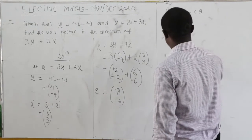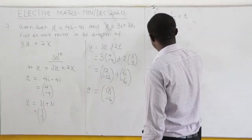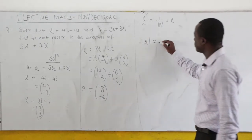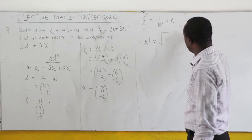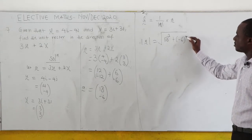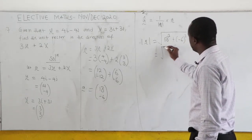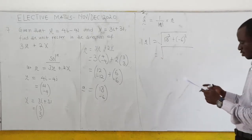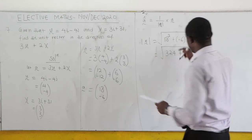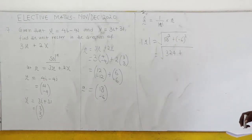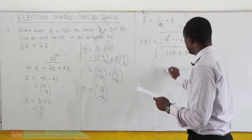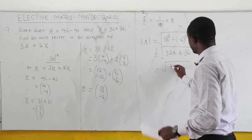What is the magnitude of a? Our vector a is (18, -6), so the magnitude of a is the square root of 18 squared plus negative 6 squared. 18 squared is 324, and negative 6 squared is 36. When we add these two we get the square root of 360.